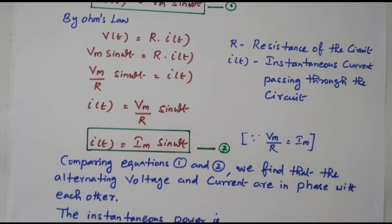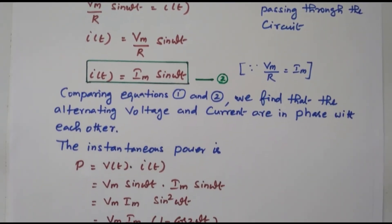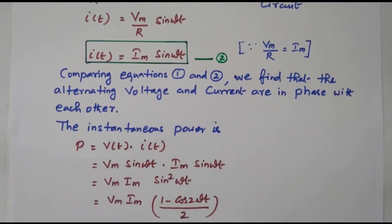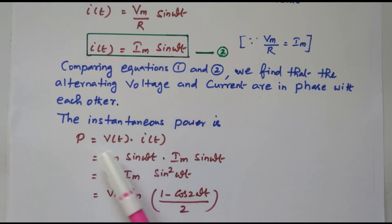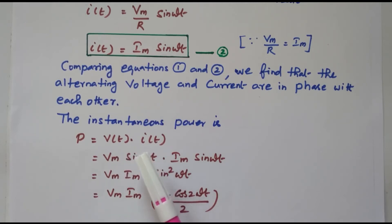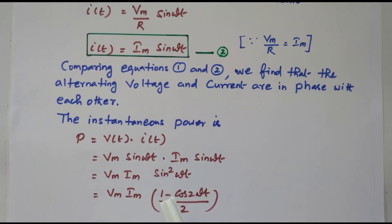Now we will find the instantaneous power of the resistive circuit. Instantaneous power means the power at a given instant, whereas average power considers the entire cycle. The formula is P = V(t) · I(t). Substituting: V(t) = Vm sin(ωt) and I(t) = Im sin(ωt), so P = Vm · Im · sin²(ωt).